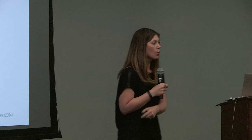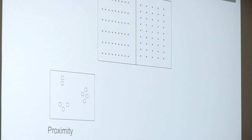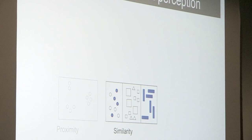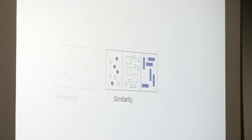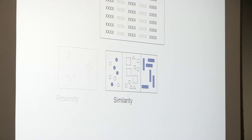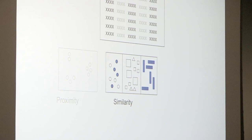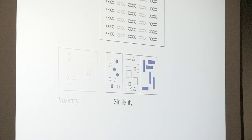The first principle is proximity: we tend to think of objects that are physically close together as belonging to a group. In tables, simply by differentiating the spacing between elements, your eye is drawn either across the rows or down the columns. The next principle is similarity: we tend to think of objects that are similar in color, size, orientation, or shape as belonging to a group. We can use this in tables to draw our audience's eyes in the direction we want them to focus, eliminating the need for additional elements like table borders.